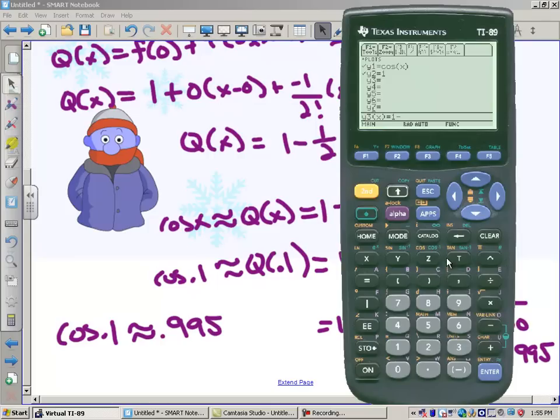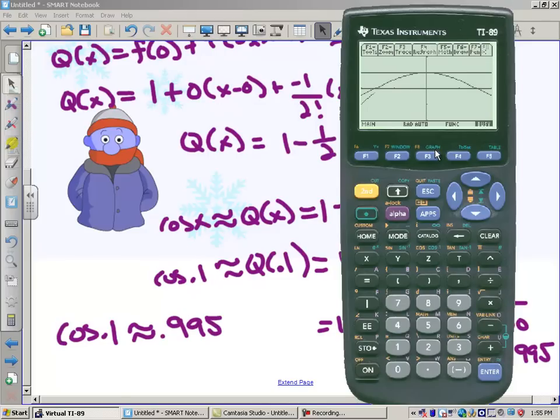Our quadratic approximation is 1 minus 1 half x squared. And let's see if graphically, if this is any better. So there is 1 minus 1 half x squared.